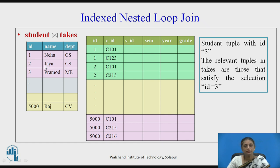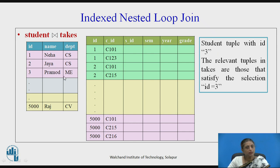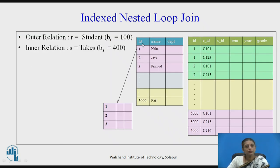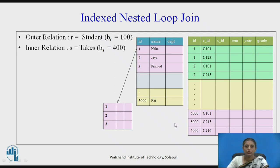In nested loop join, we take the first tuple and try to match it against all the records of S. But in index nested loop join, we take a record — for example the third record with id = 3 — and find all records from the takes relation having the condition id = 3 using the index. When performing the operation, if the entire relation fits in main memory, it is straightforward; otherwise we bring blocks into main memory. In contrast to nested loop join, each tuple of R is matched not with every tuple of S, but only via the index.